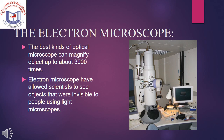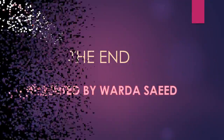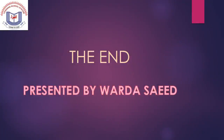The Electron Microscope: The best kinds of optical microscope can magnify objects up to about 3000 times. The electron microscope has allowed scientists to see objects that were invisible to people using a light microscope.